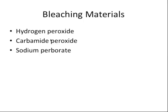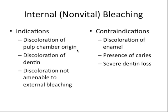Here are bleaching materials used. We talked extensively about hydrogen peroxide and carbamide peroxide in our video on external bleaching, but these are actually not indicated in most cases for internal bleaching because they're too potent — they can cause damage to tissue on contact. Sodium perborate is more easily controlled and much safer to use, so sodium perborate is our material of choice for internal bleaching.